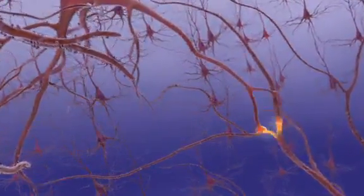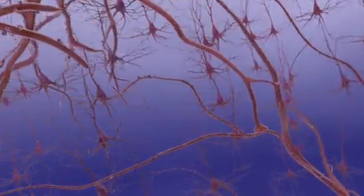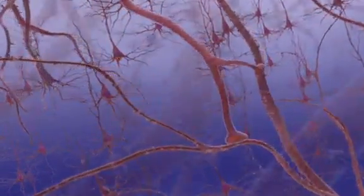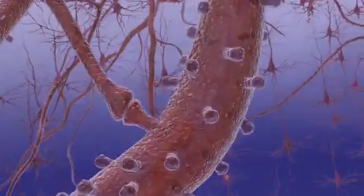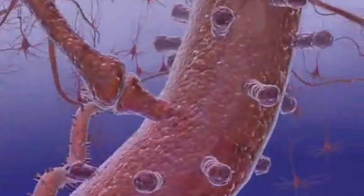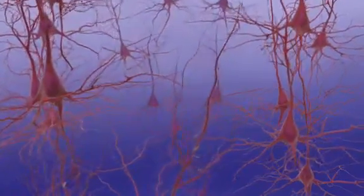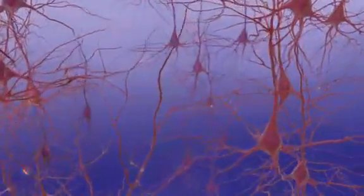Electrical charges travel down the axon to the end of the neuron and release chemical messengers called neurotransmitters. The transmitters move across microscopic gaps or synapses between neurons and bind to receptor sites on the dendrites of the next neuron. This cellular circuitry enables communication within the brain.